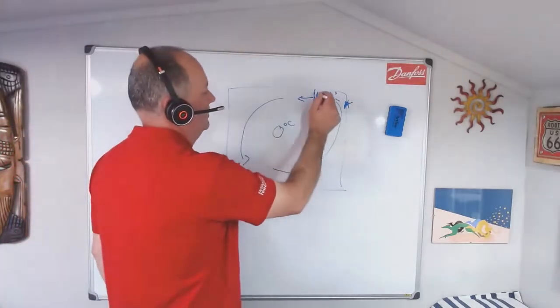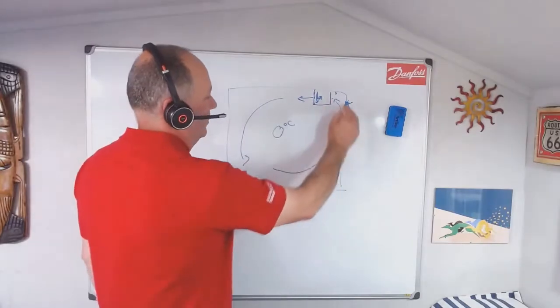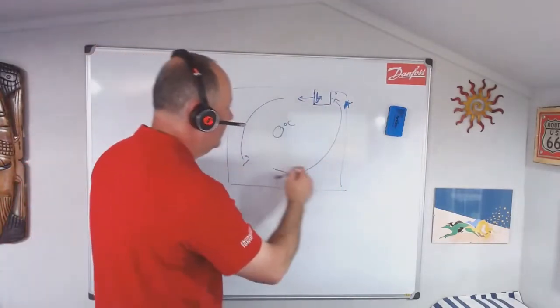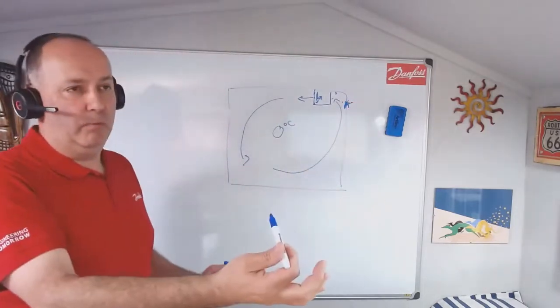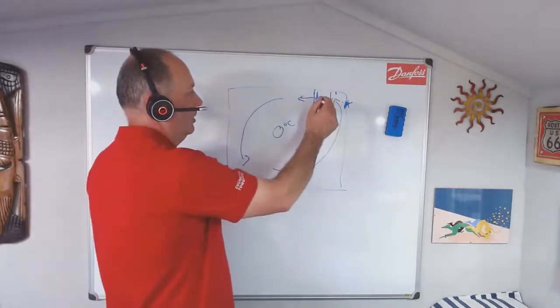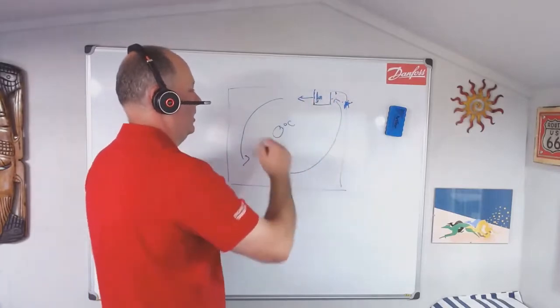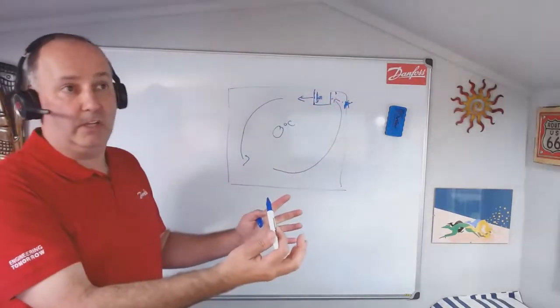If we turn our fan off totally, then we don't get any air movement over the product, so we're just relying on the natural convection of that air, coming back, hitting our thermostat and saying, it's a little bit warm again.